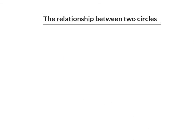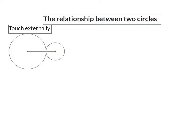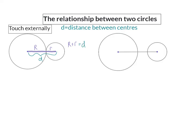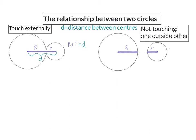Let's have a look at the relationship between two circles. Our first relationship is where two circles touch externally, and because we are now working with two circles we have two radii, so I'm going to work with a capital R and a small r. Here you will notice that the sum of the two radii will be the same length as the distance between the two centers, and this only happens if the two circles touch externally. Our next relationship is when the two circles do not touch and the one lies outside the other. This time the sum of the two radii will be smaller than the distance between the two circle centers.